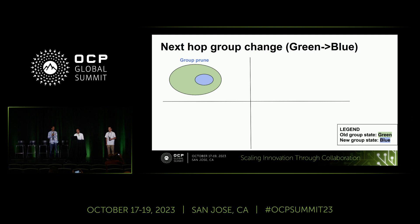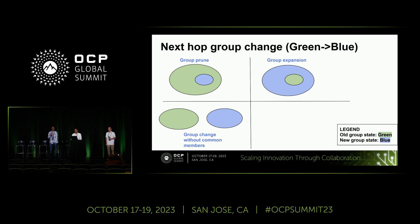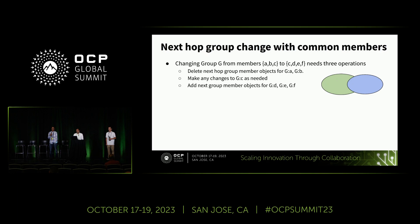These are some of the next hop group change scenarios. Green represents the starting state and blue is the ending state. You could have a prune where members are removed, an expansion where members are added, or a case where the group is changed entirely. Deep diving into the last scenario: when a next hop group changes from members A, B, C to members C, D, E, F — some members like A and B are removed, D, E, F are new, and C carries over with a possibly modified weight.